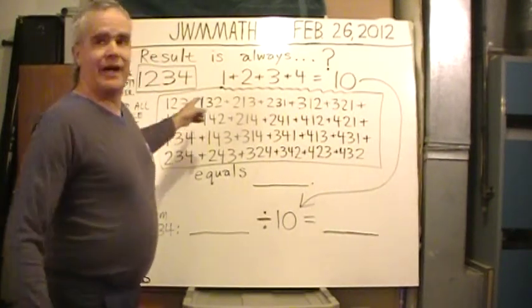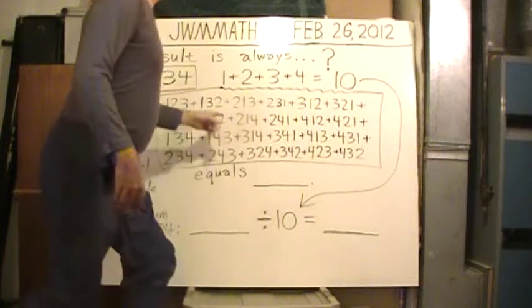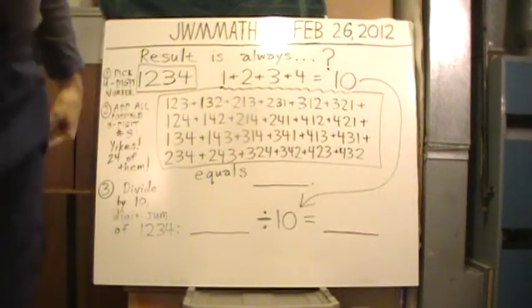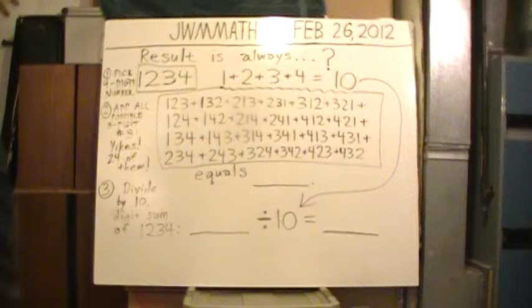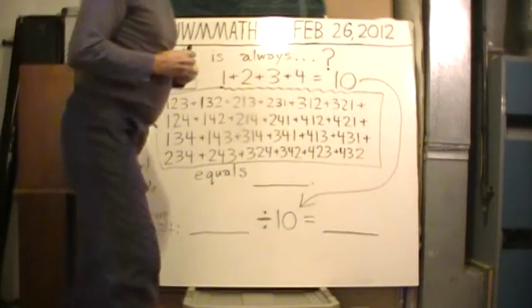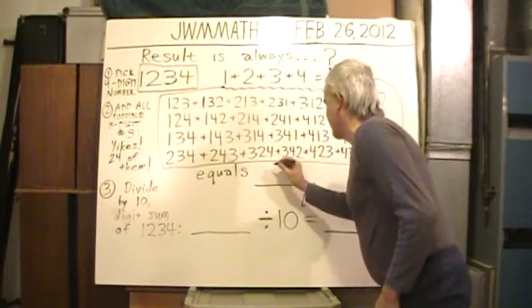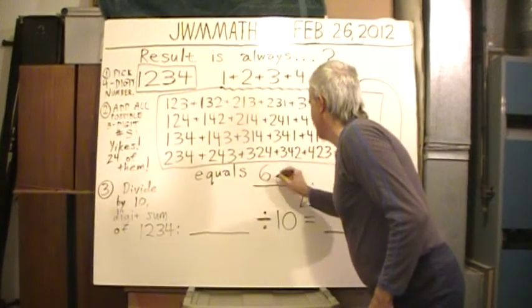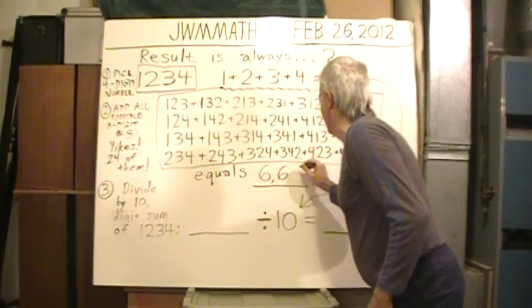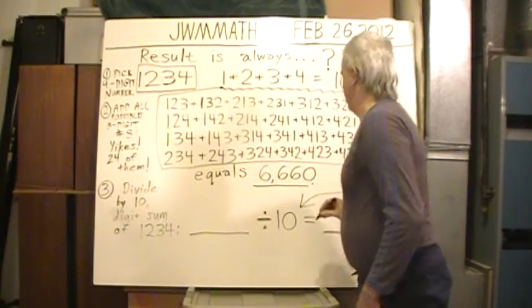So when I finally added up all those 24 numbers, I do it on the calculator or in my head and with my pen. I finally get this correct sum: 6,660. Phew.